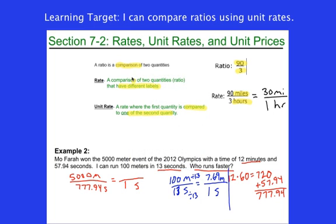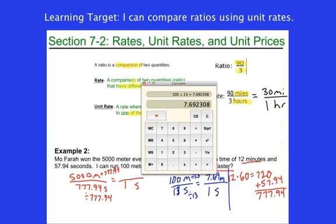So in one second, I'm running 7.69 meters per one second, I should say. Alright, for Mo, I'm going to divide top and bottom by 777 seconds with the decimals. Again, divide top and bottom. If I only divide the bottom, it's not the same ratio.